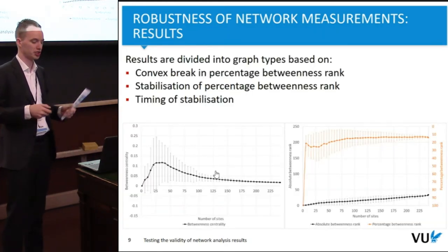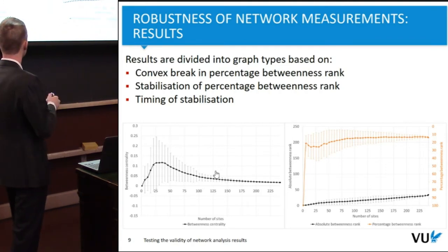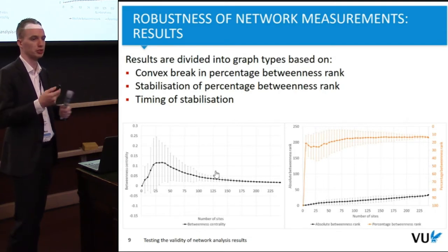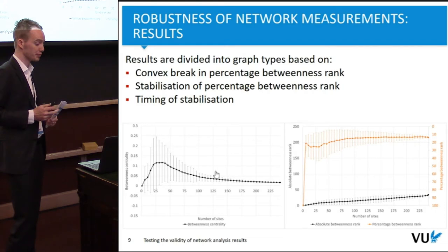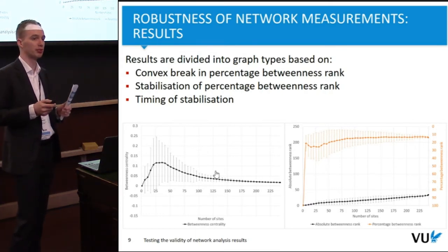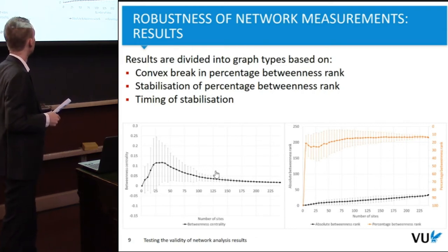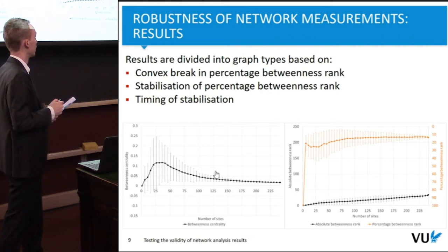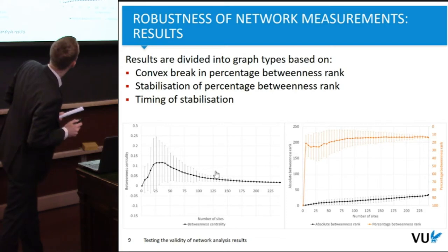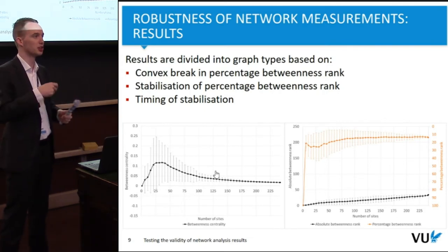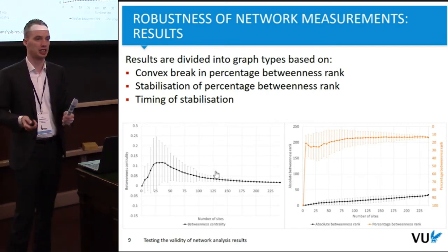This is the typical output of such a simulation, showing the development of betweenness centrality. I've done this for each site not just once but a hundred times, to capture the variation in this random simulation. More interesting is the betweenness rank, which I define as the relative importance of a site in relation to other sites. I'm particularly interested in the percentage betweenness rank — for instance, at around 242 sites it's about 12% — and specifically in the stabilization of this measurement, which tells us about the stabilization of a site's role within the network.